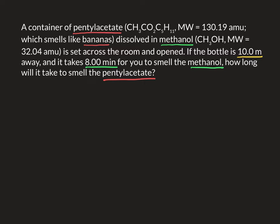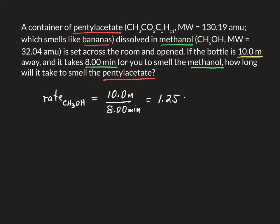Our first interesting question is: what is the rate at which methanol diffused? Well, we've got a distance — how far away the bottle is — and the time it takes to cover that distance. So it's 10 meters in 8 minutes, which equals 1.25 meters per minute as a measure of that rate of diffusion.